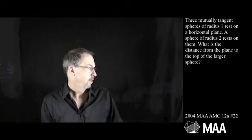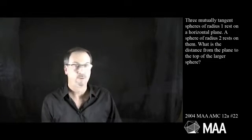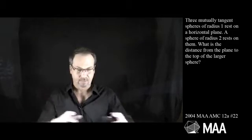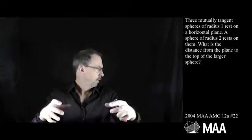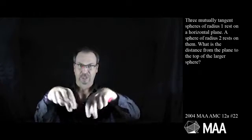Three mutually tangent spheres of radius 1 rest on a horizontal plane. Okay, so three spheres sitting on a tabletop or something. Mutually tangent, so I guess they're touching each other in a little triangle.